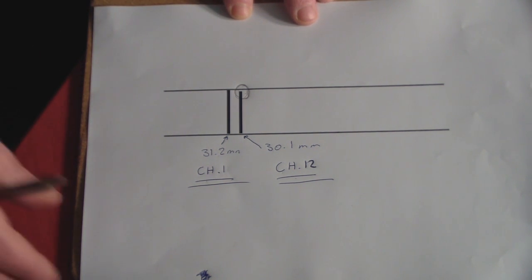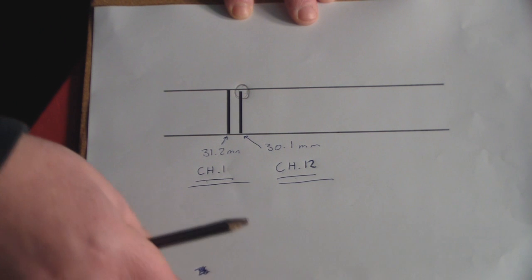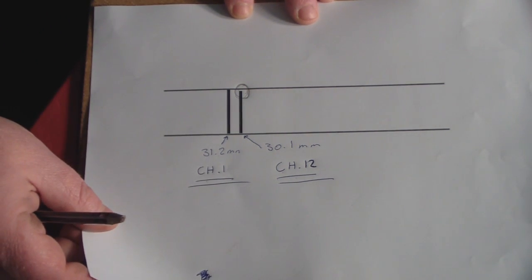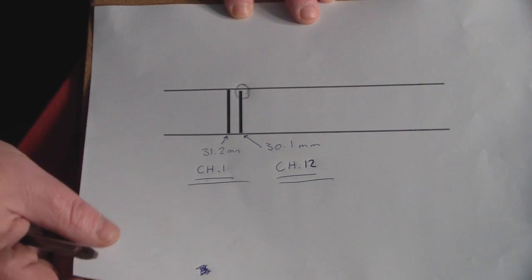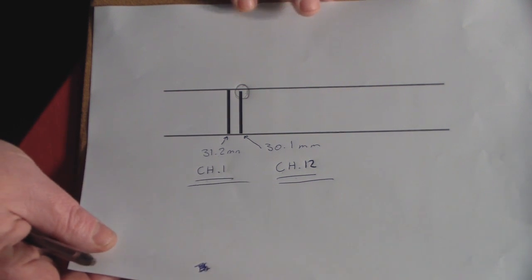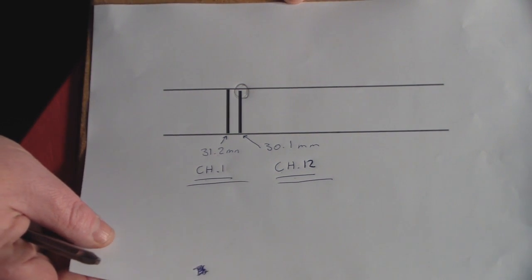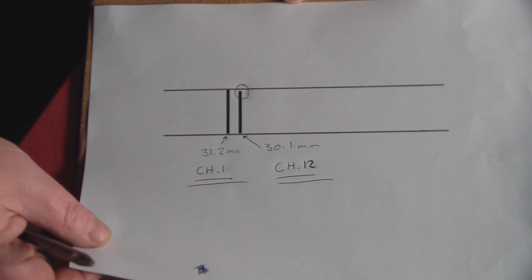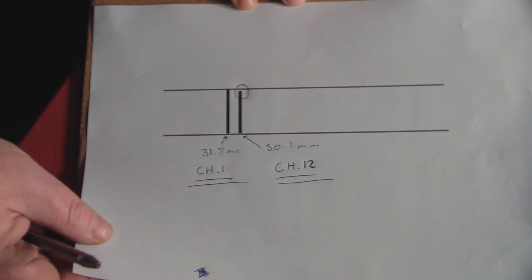When we're building a driven element by hand, it's almost impossible to get it spot on. But even though, taking a little bit of time to get it as close as possible really does make a big difference to the antenna itself when it's finished.